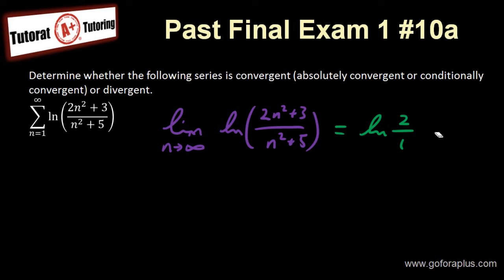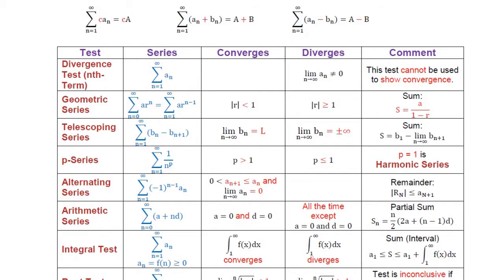So I shouldn't put bigger than. I should say that this is not equal to 0, right? Because that's the condition, not equal to 0.